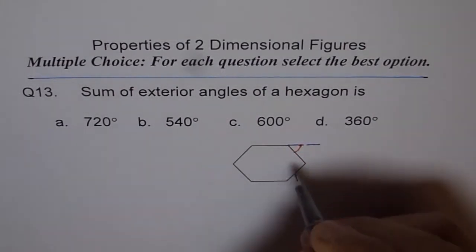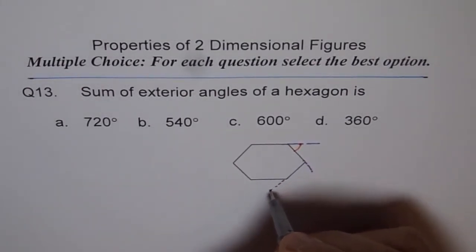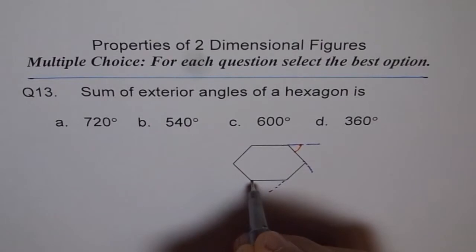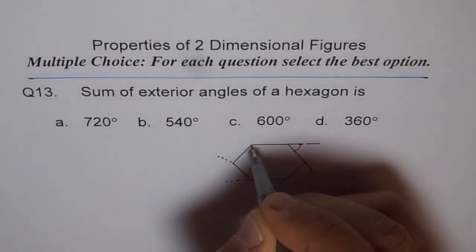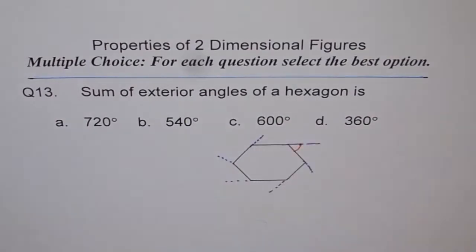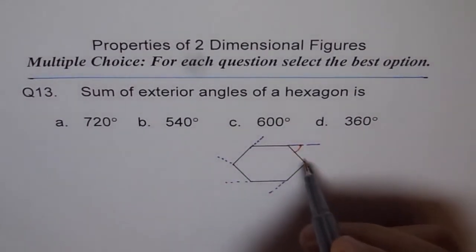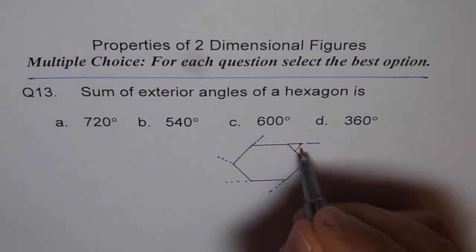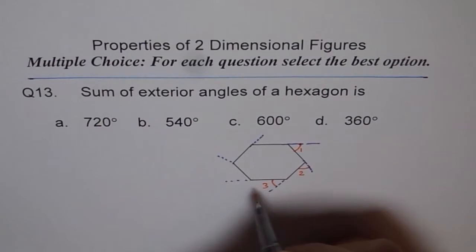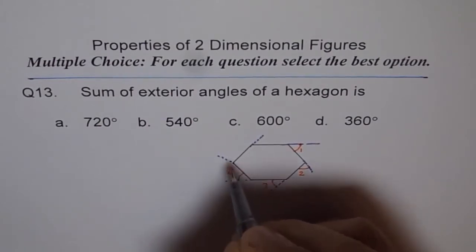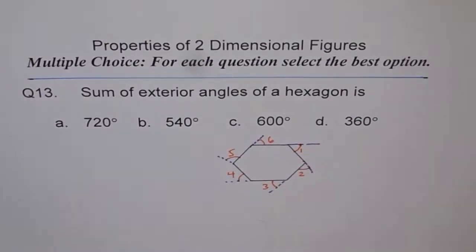Do you see that? So let me extend each side and then we will go in one particular direction and see what we get. So if you do that, the exterior angles - we have six of them. There are six sides, so we have six angles: angle 1, this is angle 2, this is angle 3, angle 4, angle 5, and angle 6.